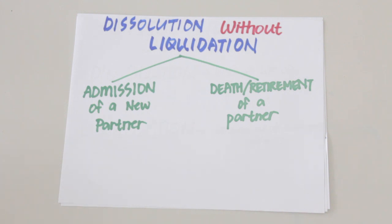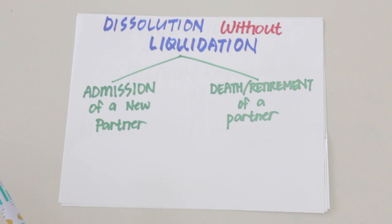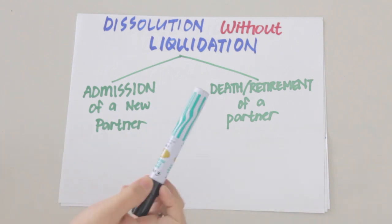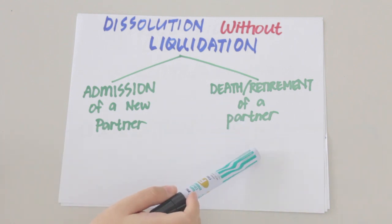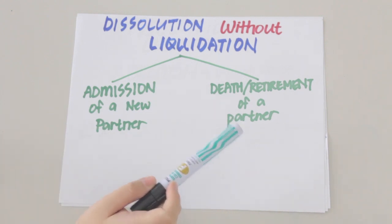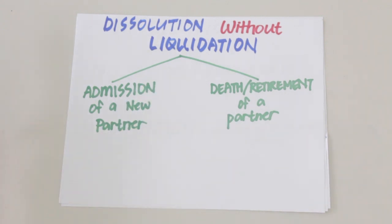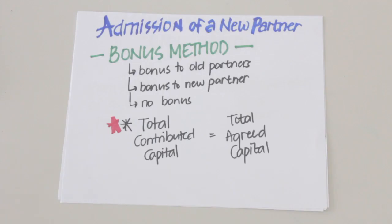There are two main ways by which a partnership may be dissolved without liquidation. First is through the admission of a new partner, and second is through the death or retirement of a partner.